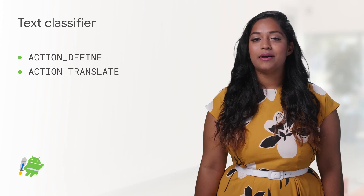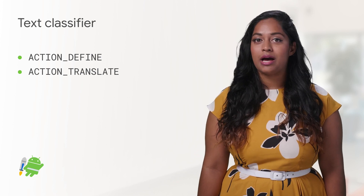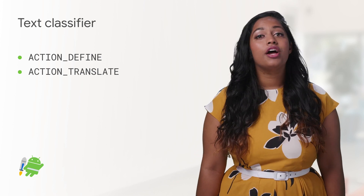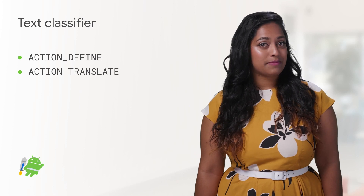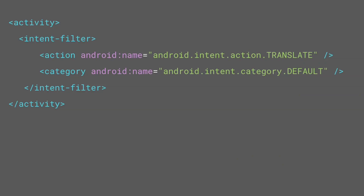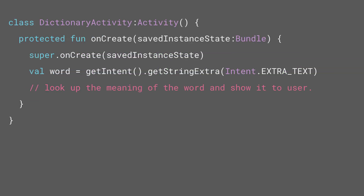If your app is a dictionary app or a translation app and you want it to show up in the toolbar, you'll need to make a couple of changes to your app's manifest. First, add an Intent filter for Android.Intent.Action.Translate or Android.Intent.Action.Define. Second, your app will receive the word to be defined or translated using GetIntent.GetStringExtra(Intent.EXTRA_TEXT).